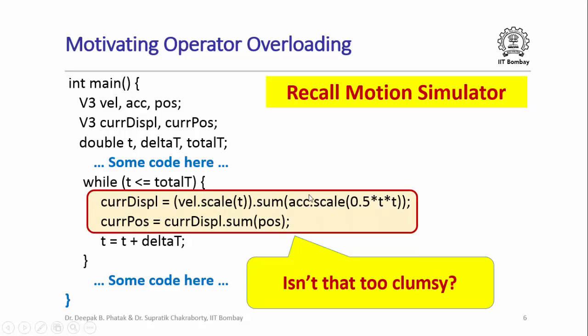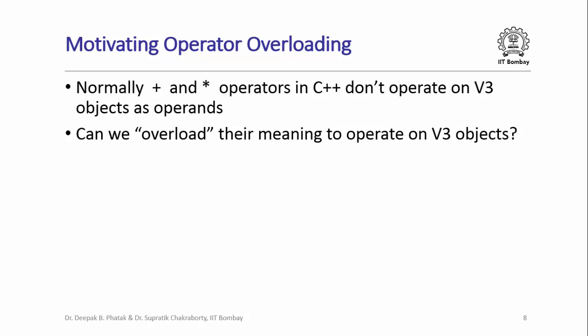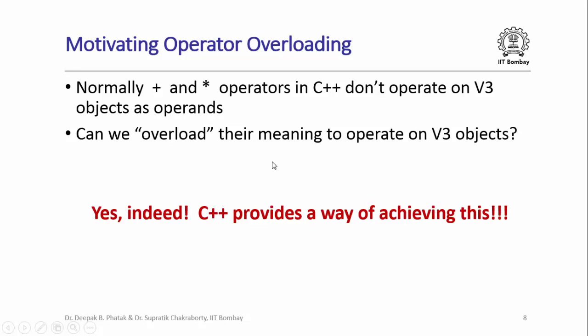Isn't this too clumsy? We wanted to do simple vector scaling and addition but look at what we ended up doing. The question is: can we write this in C++ in a cleaner way, using plus and star operators directly on vectors just as we want? The problem is that normally plus and star operators in C++ do not operate on V3 objects as operands. But can we overload the meaning of plus and star operators to work on V3 objects? The answer is a resounding yes.